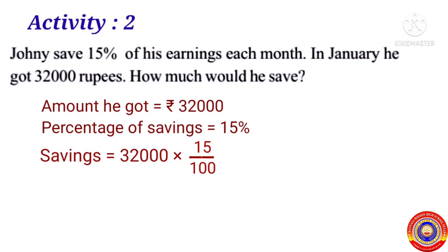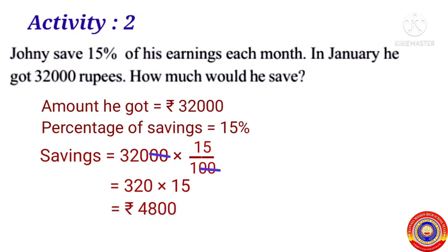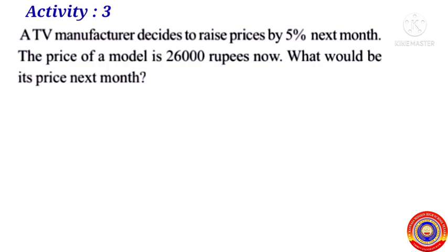Therefore savings is equal to 32,000 multiplied by 15 by 100. Cancel the two zeros from both the numerator and the denominator. After cancelling, we got 320 multiplied by 15, that is equal to 4800 rupees. Therefore the amount of savings is equal to 4800 rupees. Is it clear for you children?